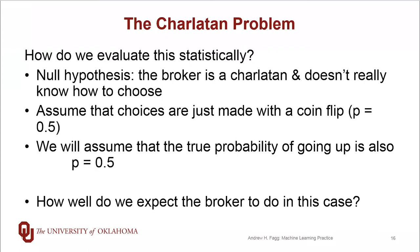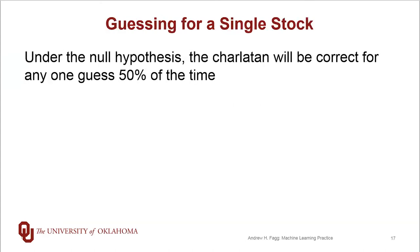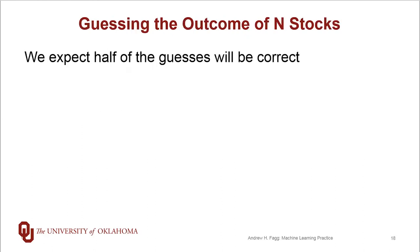Under these assumptions, how well do we expect the broker to do in any one prediction? The answer is that under this assumption, any one guess the charlatan will get correct half of the time. So, how about with n stocks? What's the expected number of stocks that the broker will have gotten correct? The answer is that the broker will make half of the guesses correct. At least that's the expectation.